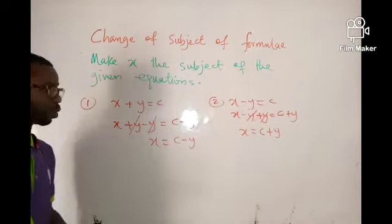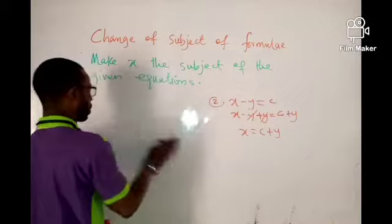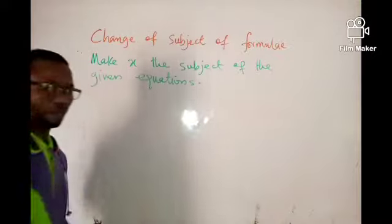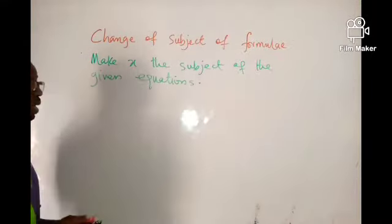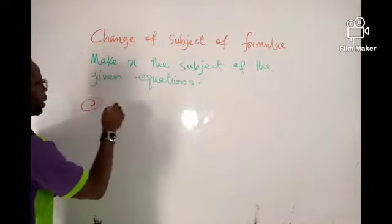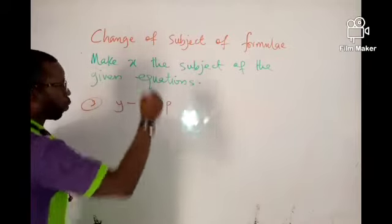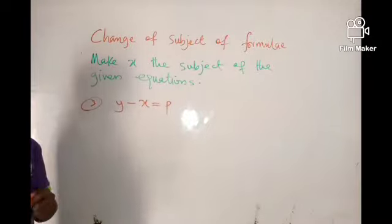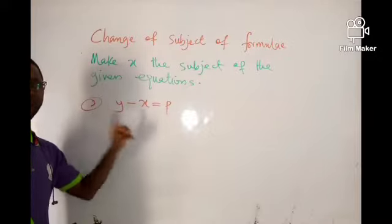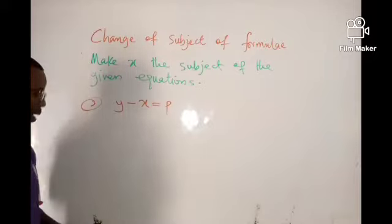One other thing to note: anything you are looking for must be a positive number. So if that thing is not positive, it is advisable to make it positive before you even start. For example, number three: if I have y minus x equals p, I'm looking for x — but the x happens to be negative. Whatever you are looking for must be a positive number, so take care of this.